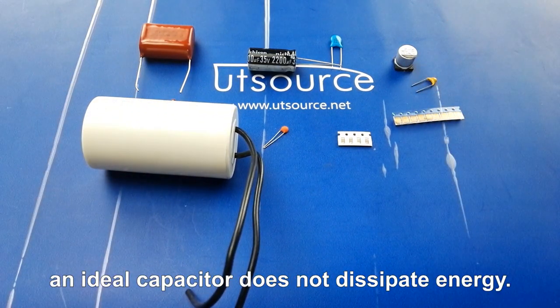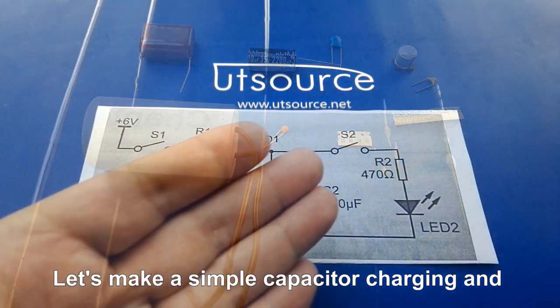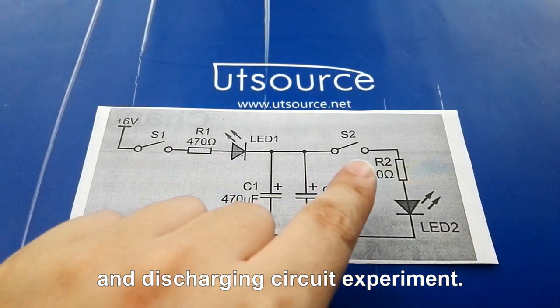Unlike a resistor, an ideal capacitor does not dissipate energy. Let's make a simple capacitor charging and discharging circuit experiment.